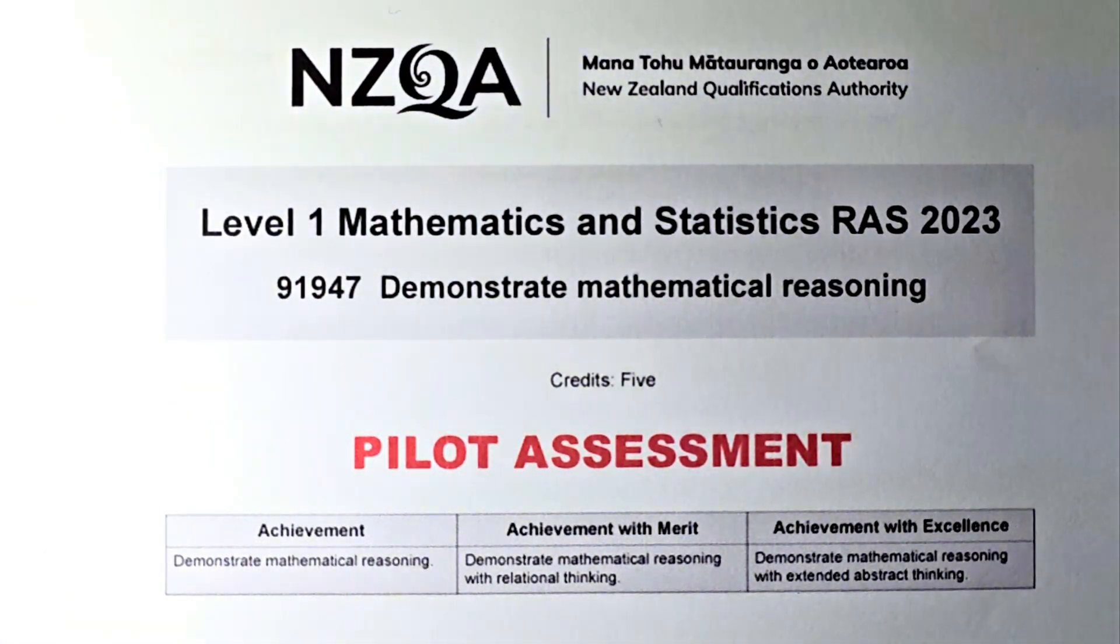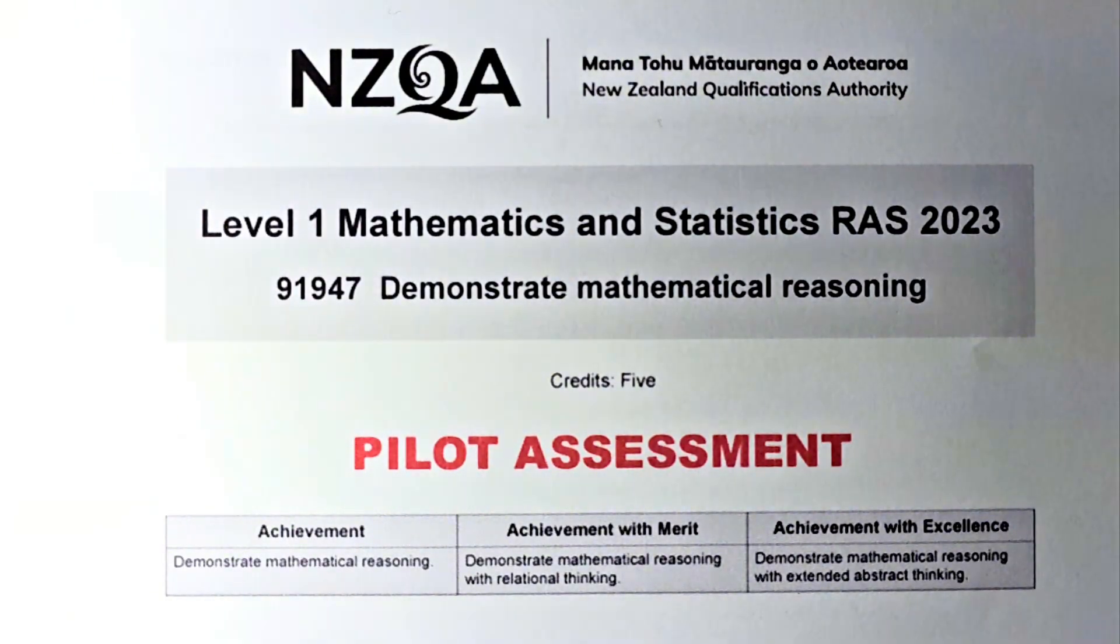Good day! In this video, we are going to try and solve question 1A of the new level 1 NCEA standard called Demonstrate Mathematical Reasoning, and the paper number is 91947.